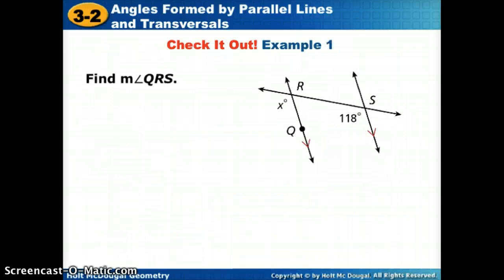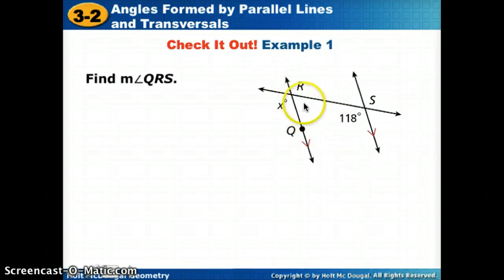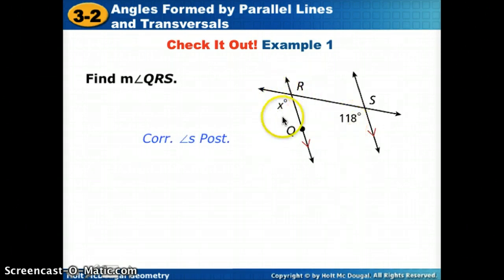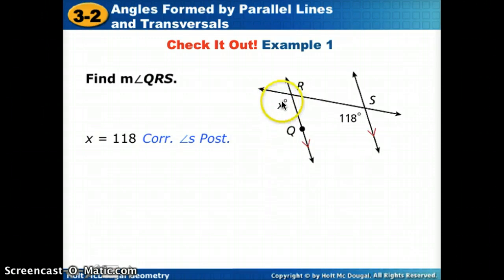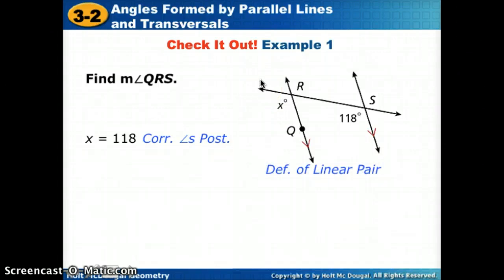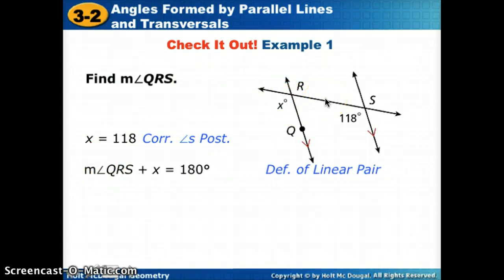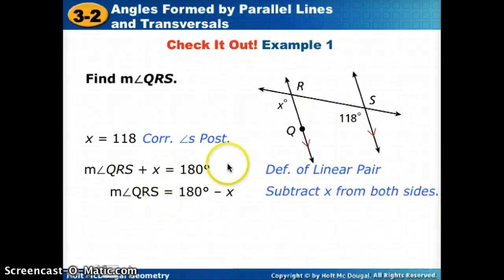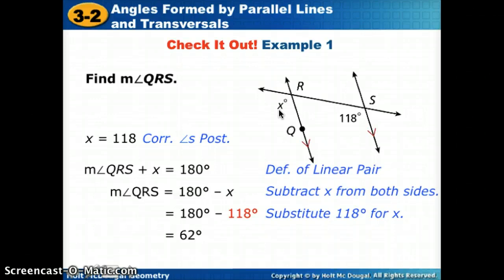Now let's find angle QRS. A big part of this is identifying what angle we're talking about — remember to connect the dots. QRS is not just X. We know by corresponding angles that the related angle is 118, so X is 18. QRS and this angle are adjacent angles that make a line — a linear pair — and linear pairs add up to 180 degrees. So QRS = 180 − 118 = 62 degrees.